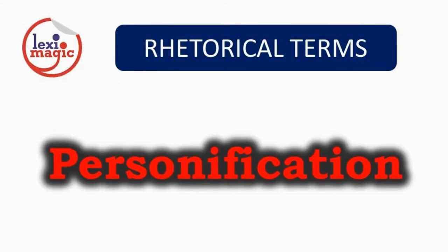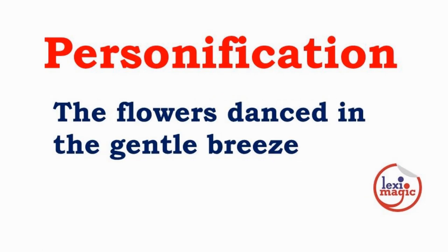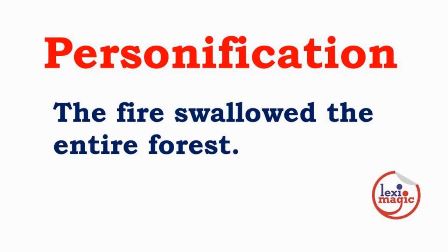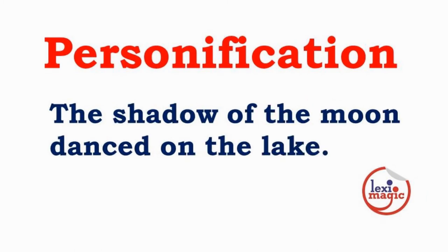Personification means using a human attribute to describe objects or other non-human things. Examples: 'The wind whispered through dry grass.' 'The flowers danced in the gentle breeze.' 'The fire swallowed the entire forest.' 'The shadow of the moon danced on the lake.' 'The flowers were blooming and the bees kissed them every now and then.'